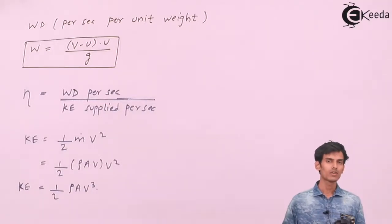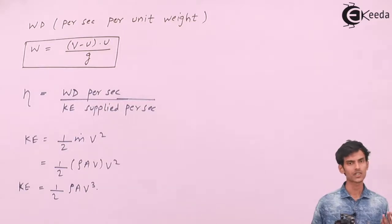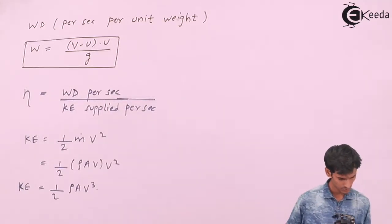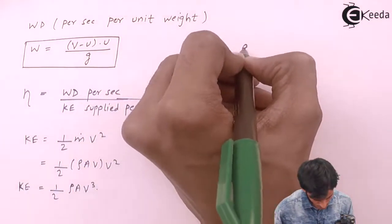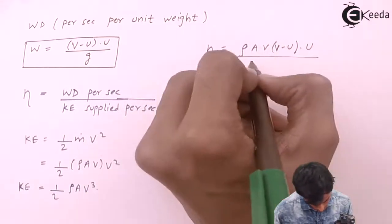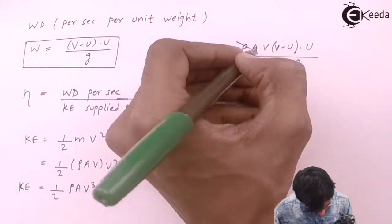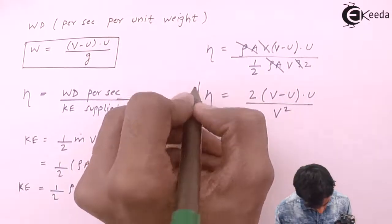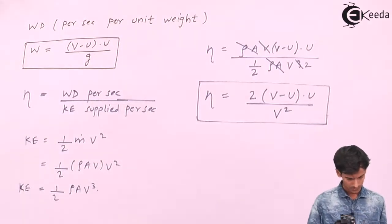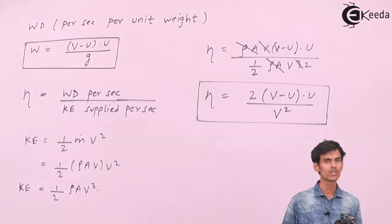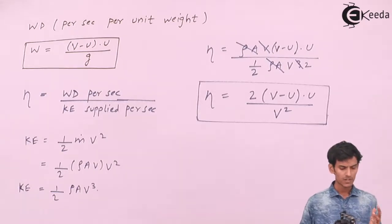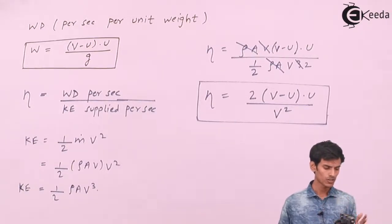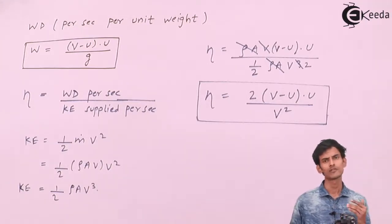The kinetic energy supplied per second comes out to ½ρaV³. Dividing work done per second by kinetic energy supplied per second gives the formula for efficiency — remember this formula. All these derivations are for a plate mounted on the periphery of a wheel where a jet comes and strikes the plate. These formulas are for that particular case only and cannot be used for any other cases.